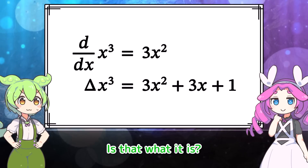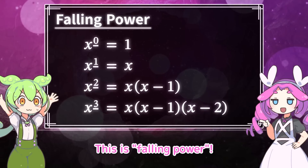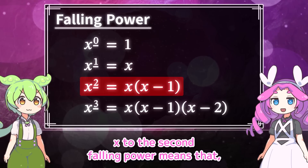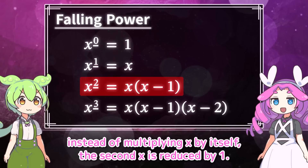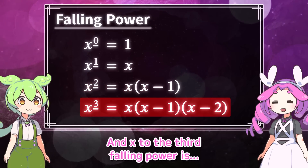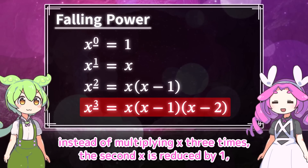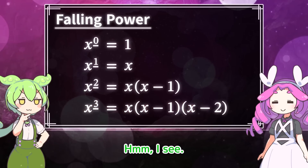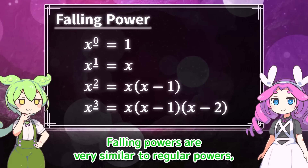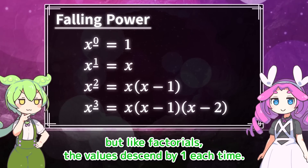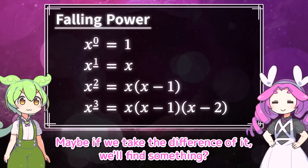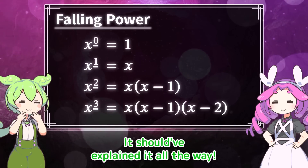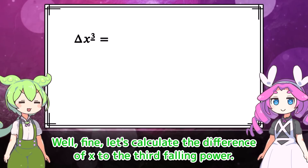I have a bad feeling about this — a hint is coming. Whoa! This is falling power. Do you know it? Never mind that, look at this. x to the second falling power means that instead of multiplying x by itself, the second x is reduced by 1. And x to the third falling power — instead of multiplying x three times, the second x is reduced by 1 and the third x is reduced by 2. Falling powers are very similar to regular powers, but like factorials the values descend by 1 each time. Maybe if we take the difference of it, we'll find something. Let's calculate the difference of x to the third falling power.